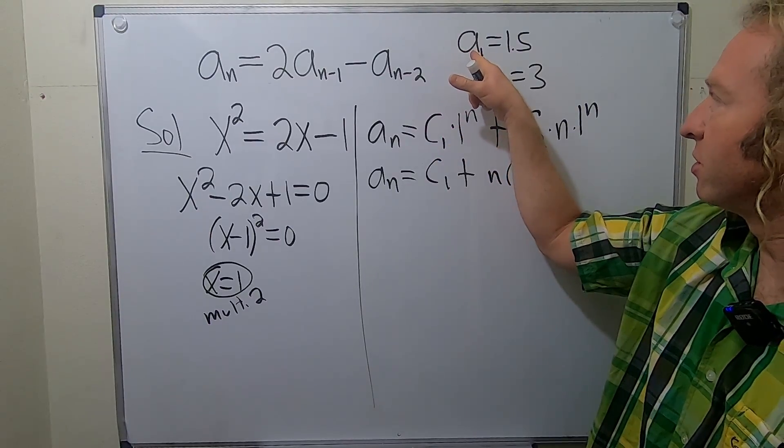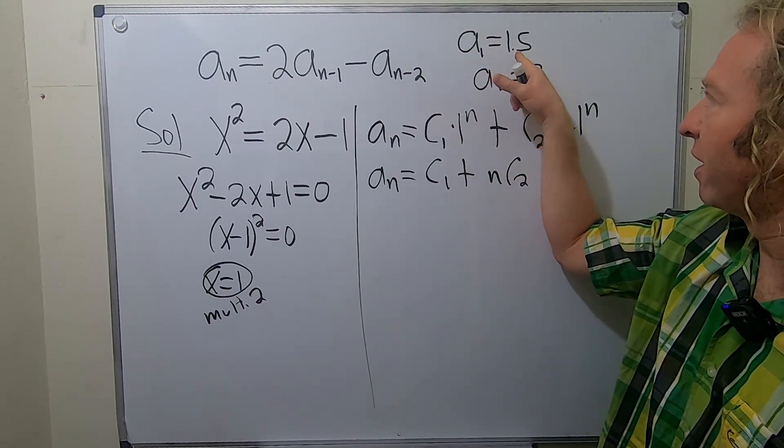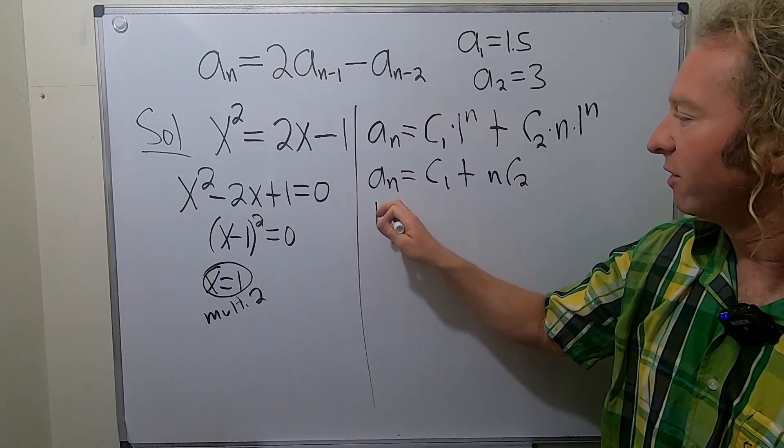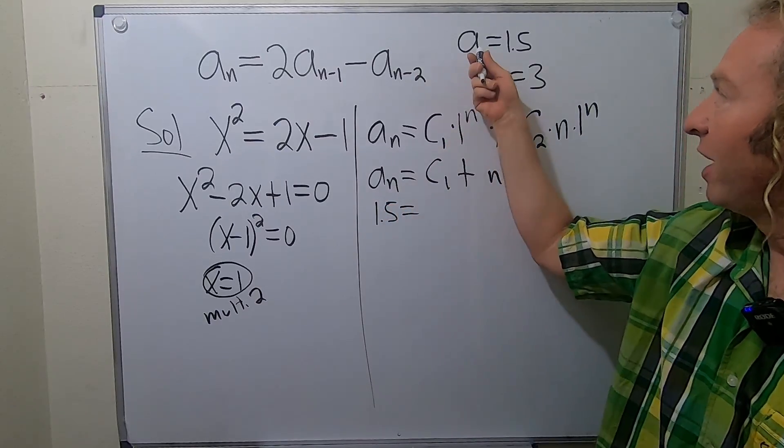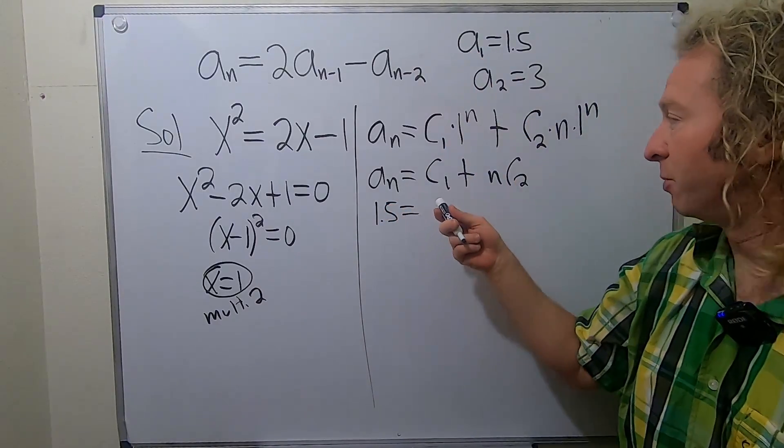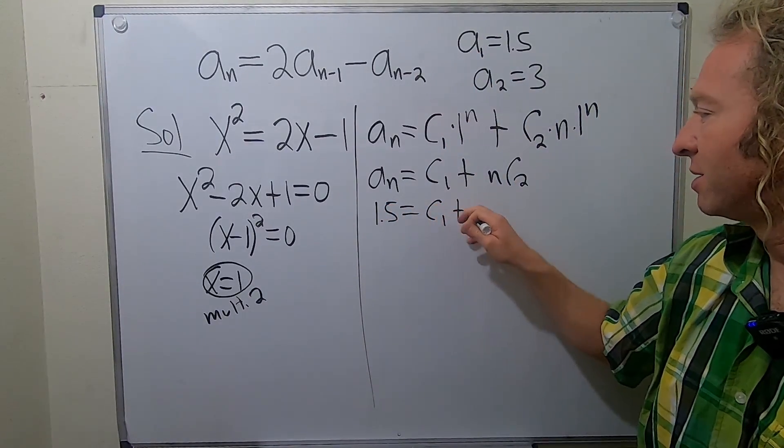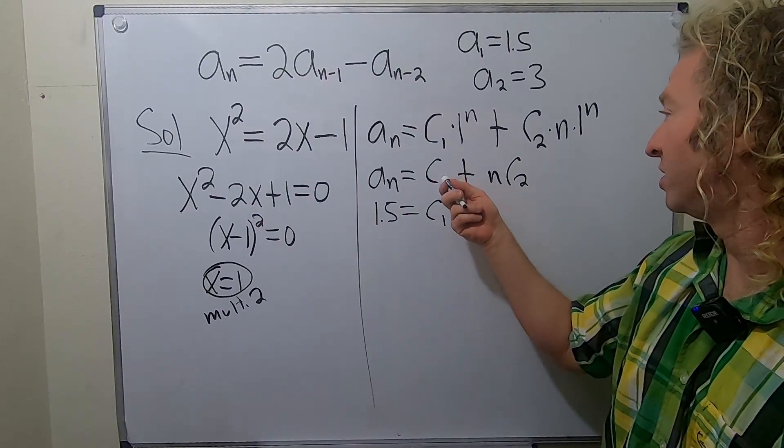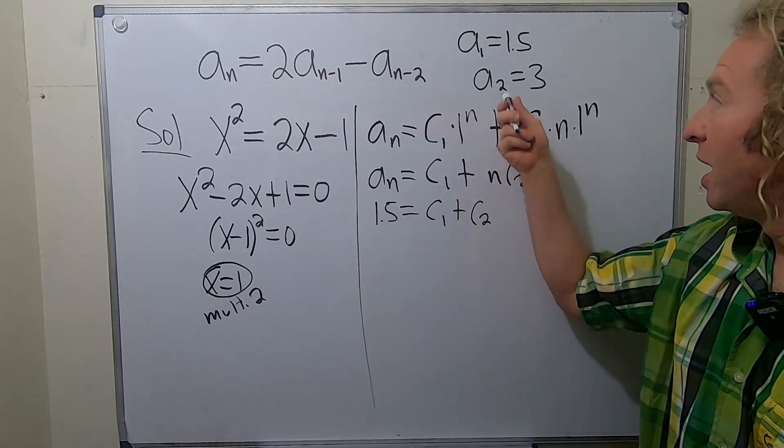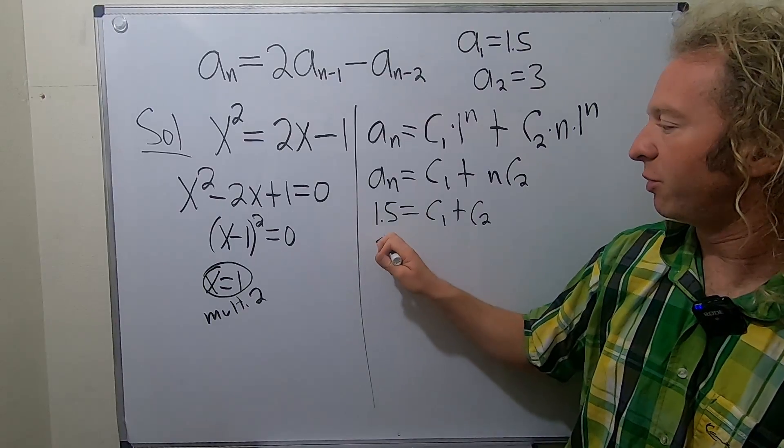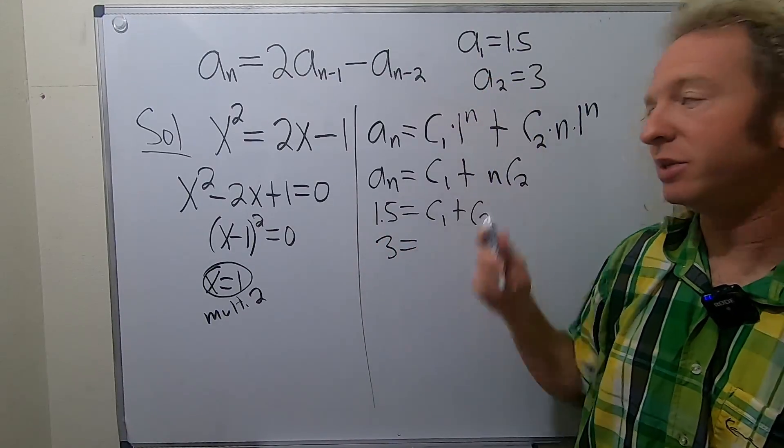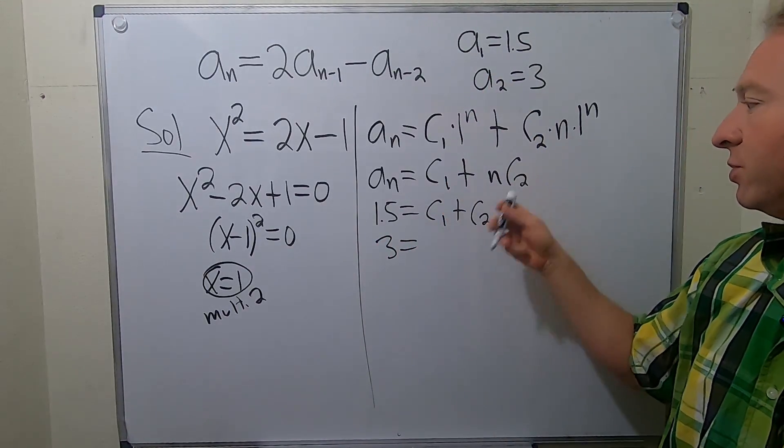So to do that, let's use this one first. So a_1 equals 1.5. So I'm going to go ahead and put the 1.5 here. And then our n is 1, right? Our n is 1. So it'll be c1 plus c2. Beautiful stuff. Really clean, right? c1 plus c2.